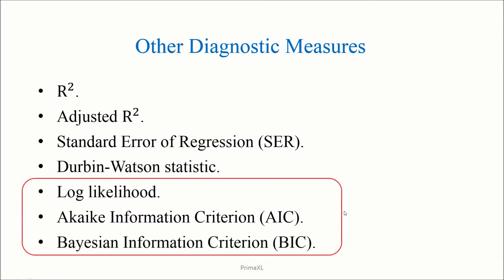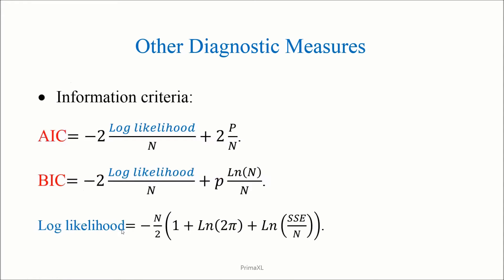Then, I'd like to focus on these three measures. The information criteria AIC and BIC are closely related to each other. In both AIC and BIC, the first term depends on the logarithmic likelihood. In the second term, P is the number of coefficients or parameters and N is the number of the observations.